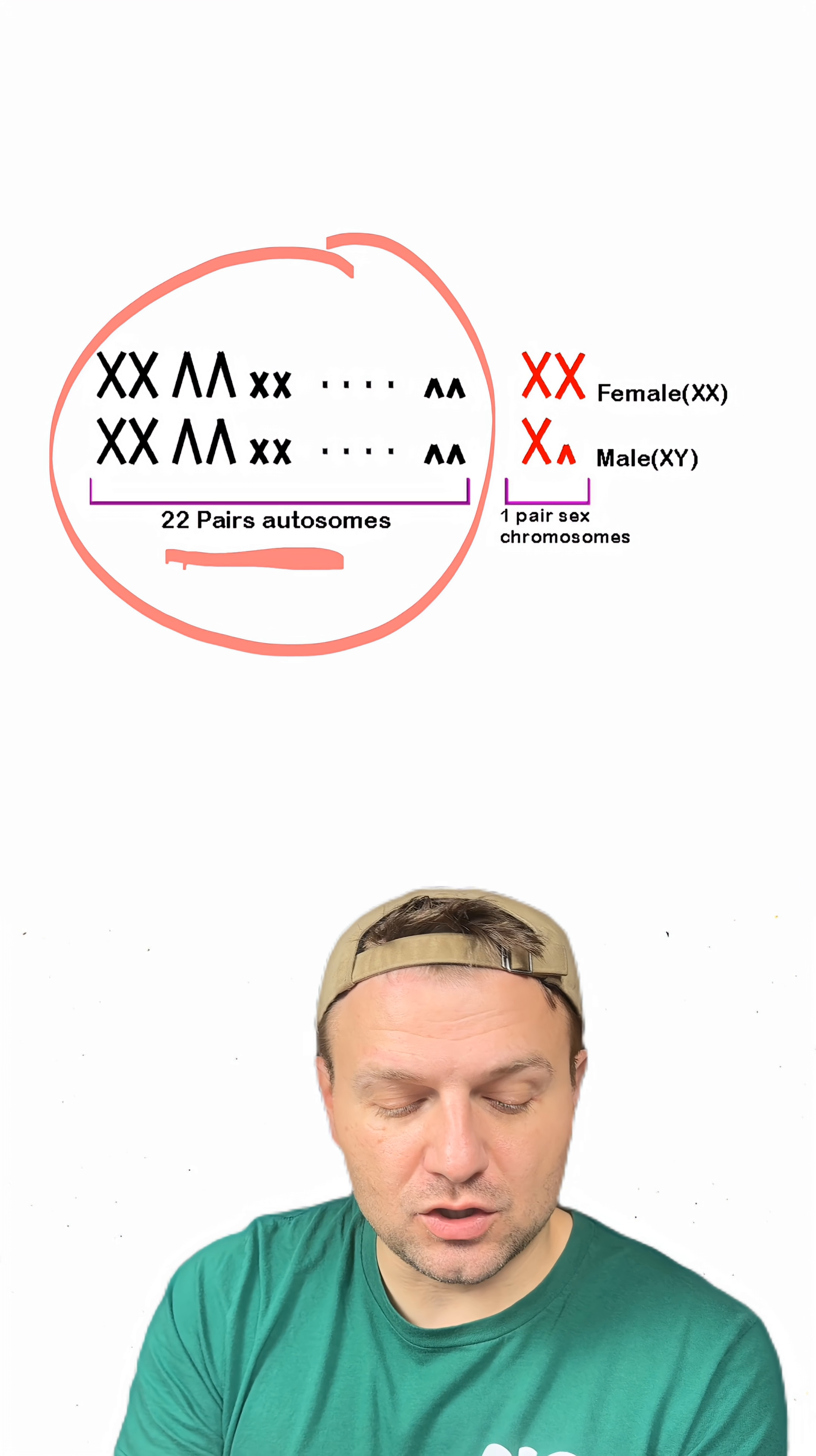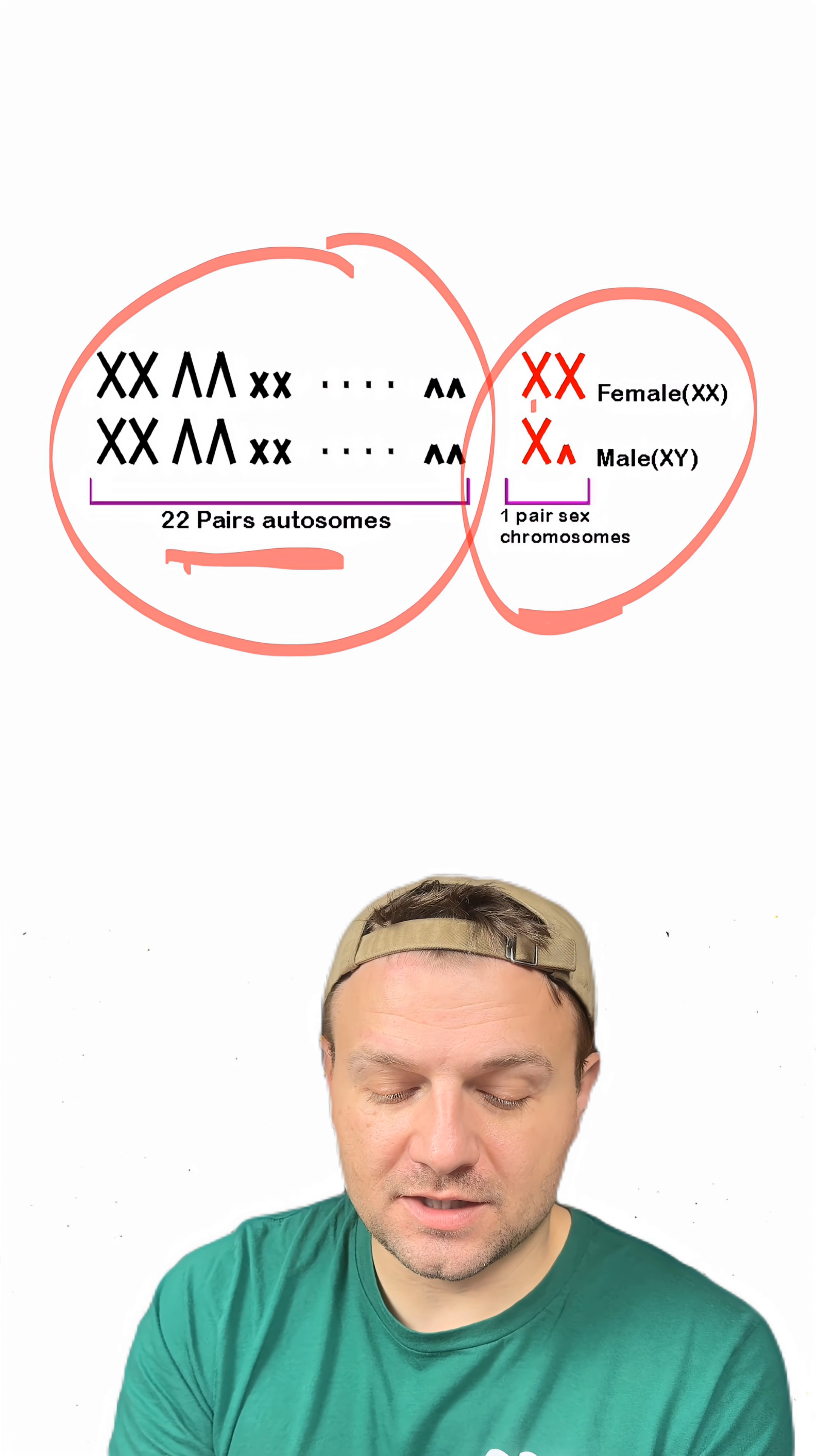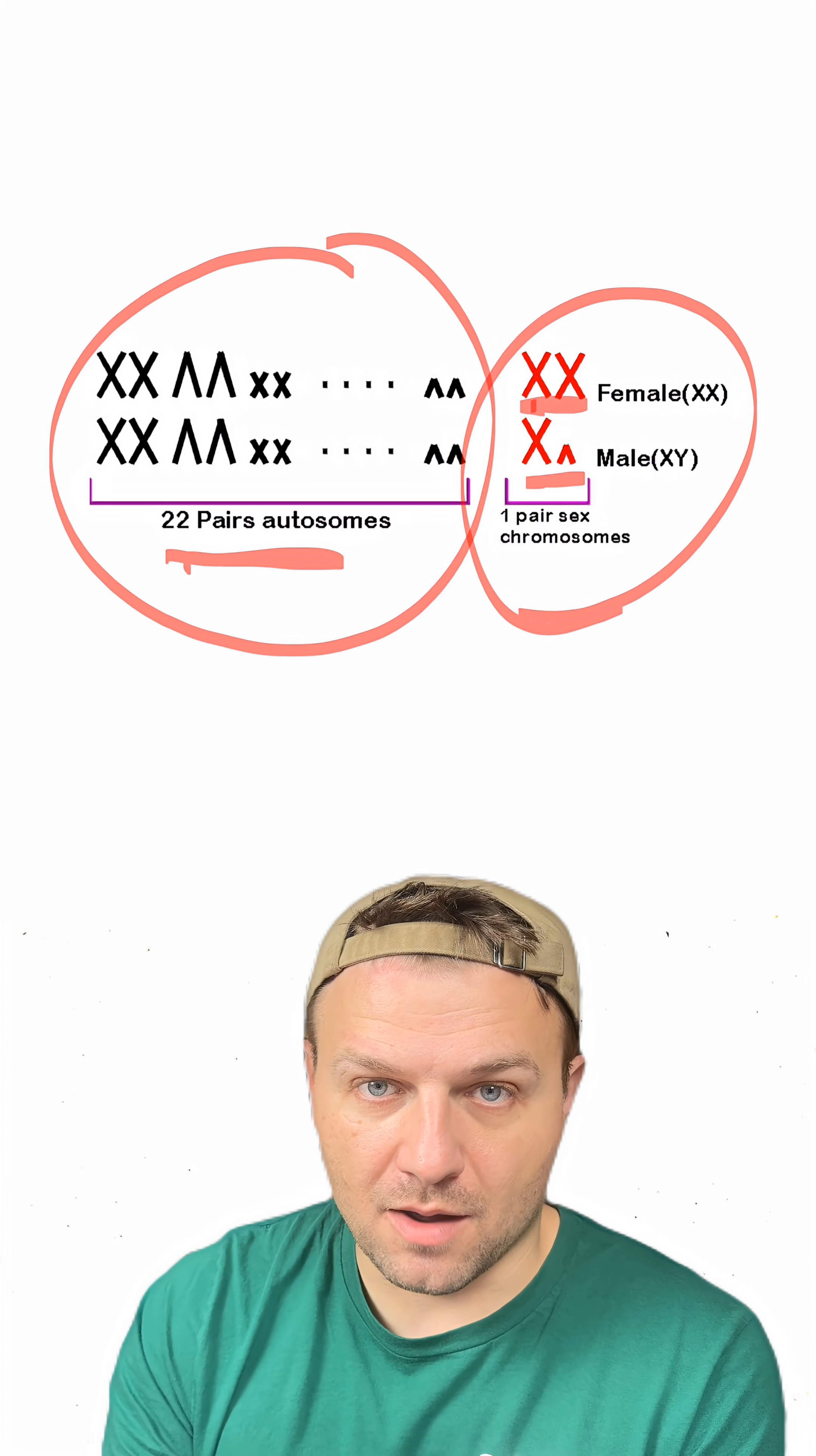If we look here, humans have 22 pairs of autosomal chromosomes, and they have one pair of sex chromosomes. Typically the pairs are XX and XY, but there are other combinations.